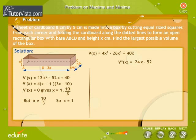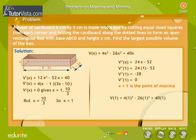So, x is equal to 1. We use the second derivative test and find V2 dash 1 by substituting x is equal to 1 in the equation for V2 dash x. V2 dash 1 is less than 0. Therefore, x is equal to 1 is the point of maxima.